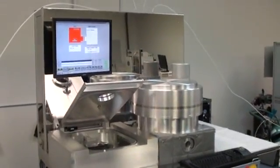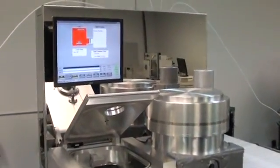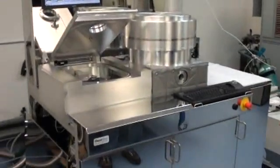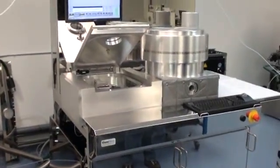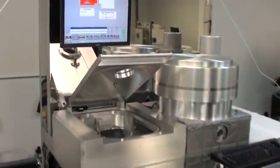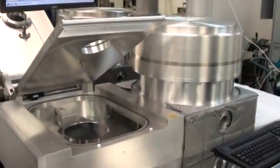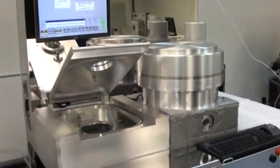We're here at Class 1 Equipment in our plasma etch lab. We're looking at a Plasmatherm SLR-770. It's set up to run the Bosch process, so deep silicon etch.